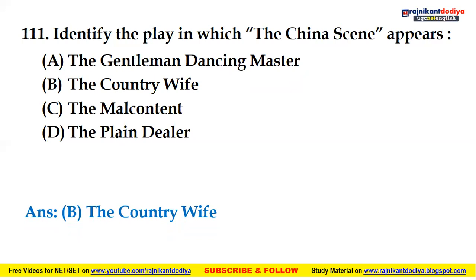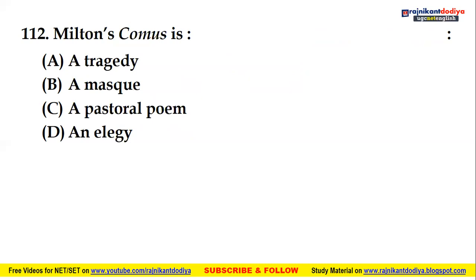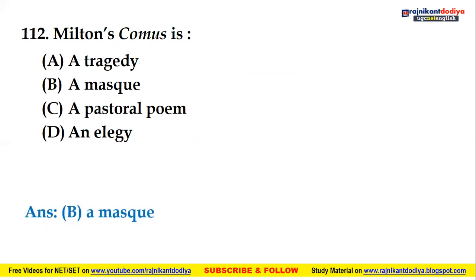The next question is about Milton's Comus — what is the genre of this particular work? Whether it is a tragedy, a mask, a pastoral form, or an allegory. The right answer is option B — a mask. The genre of Milton's Comus is a mask.